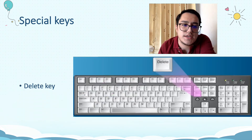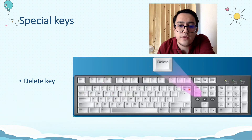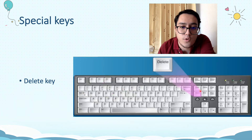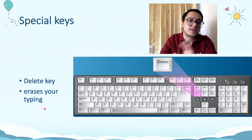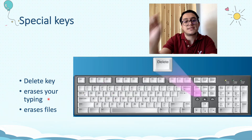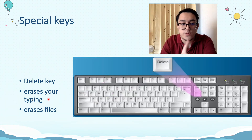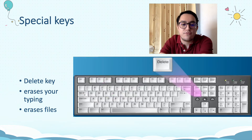Next special key is the Delete key. Can you find where the Delete key is on your keyboard? It should be around here. What does your Delete key do? Your Delete key erases your typing or erases your files. So if you select any file on your desktop and you press the Delete key, it will delete them all. Be careful when you use the Delete key — it might delete all the files that you have selected.